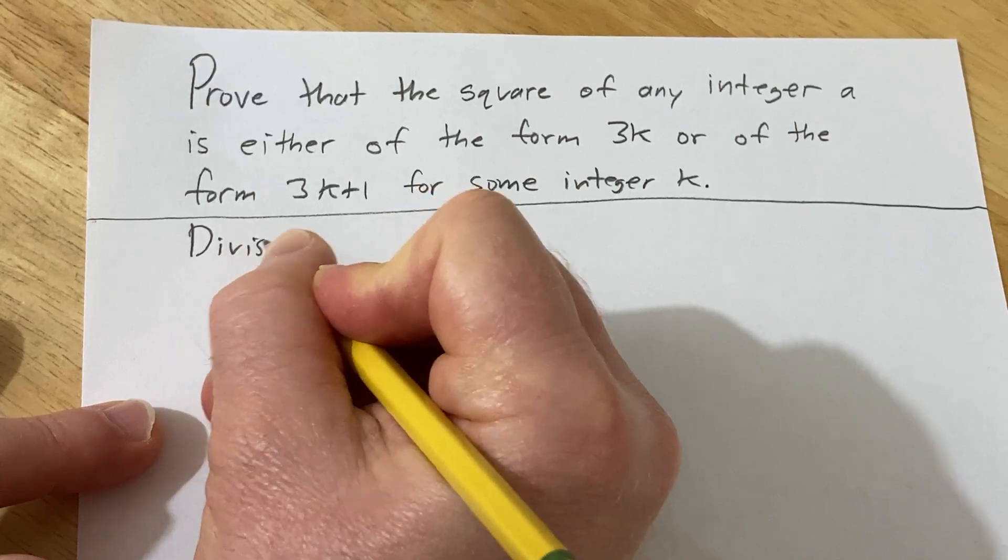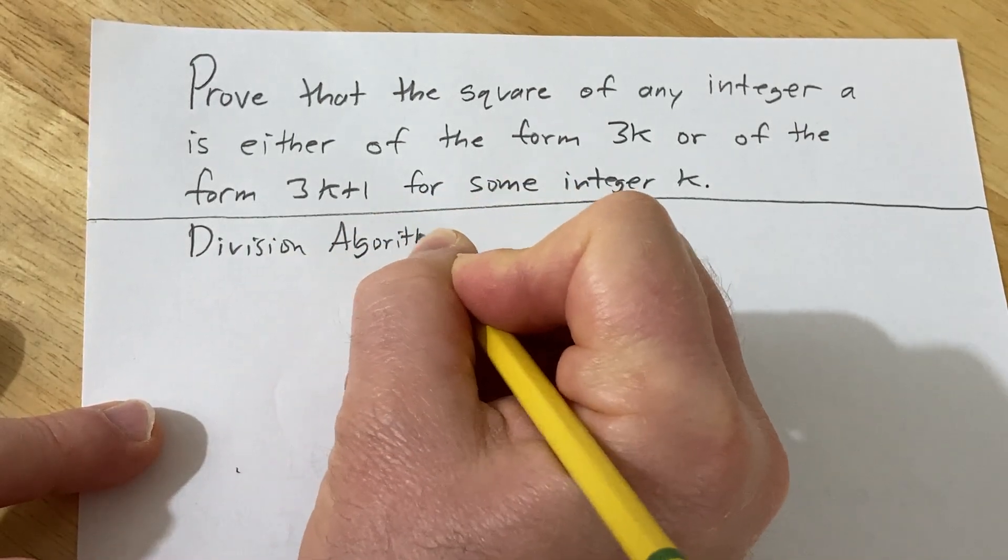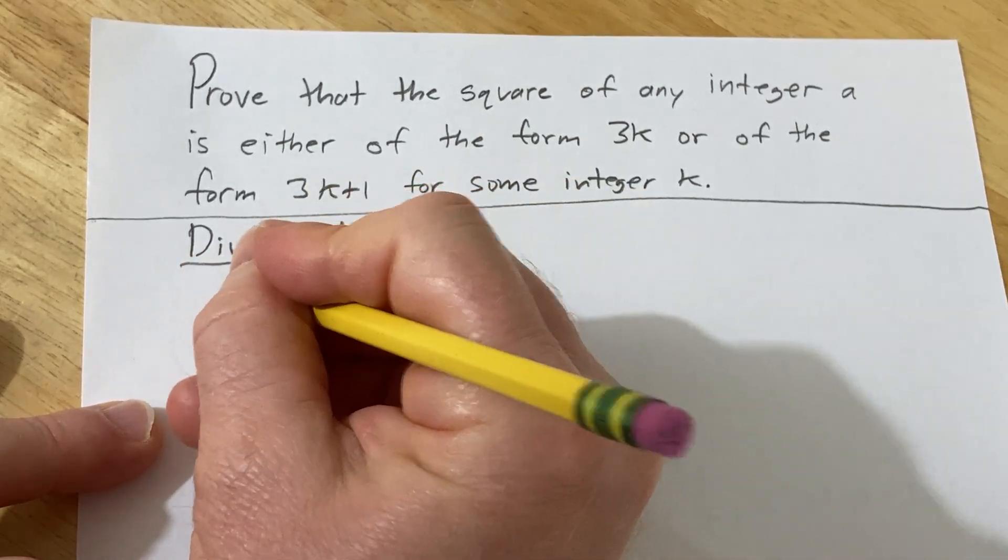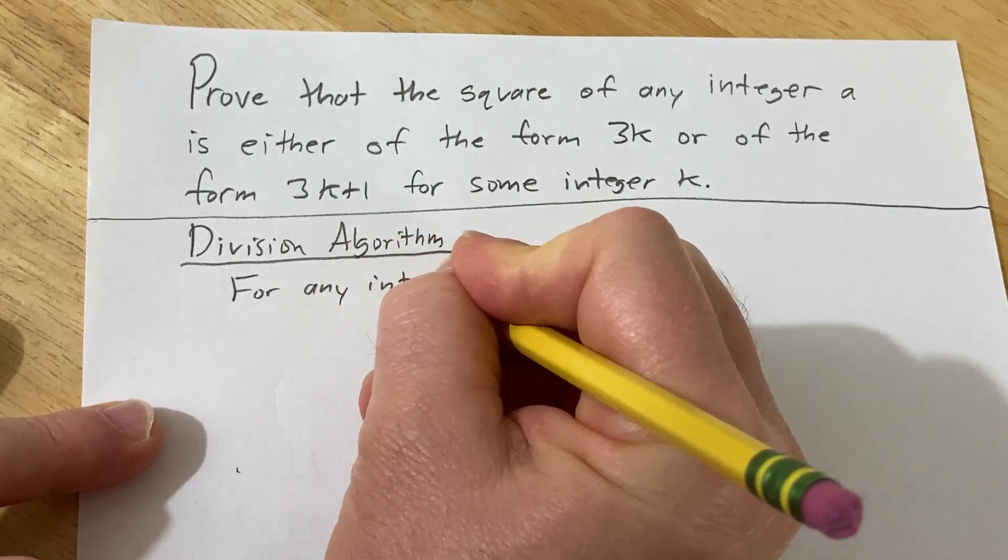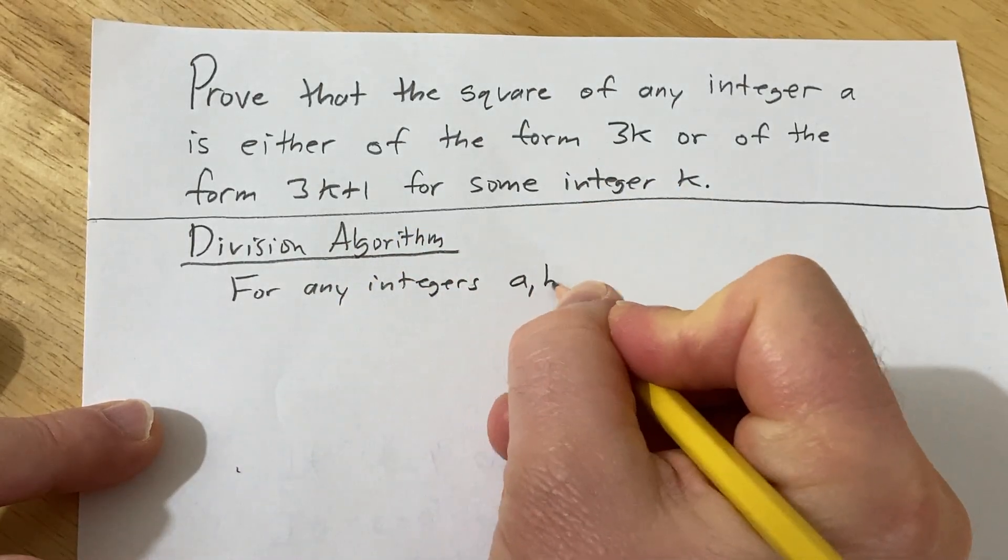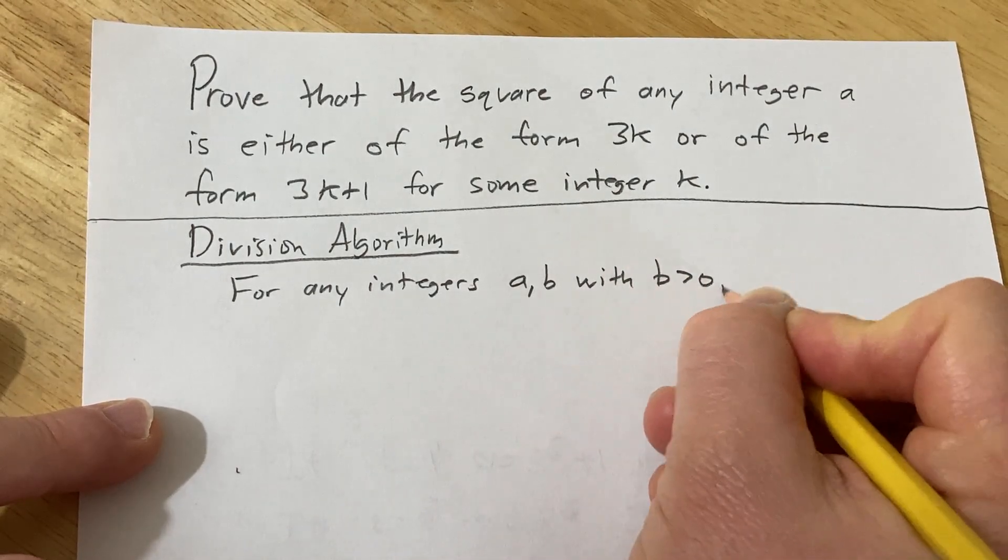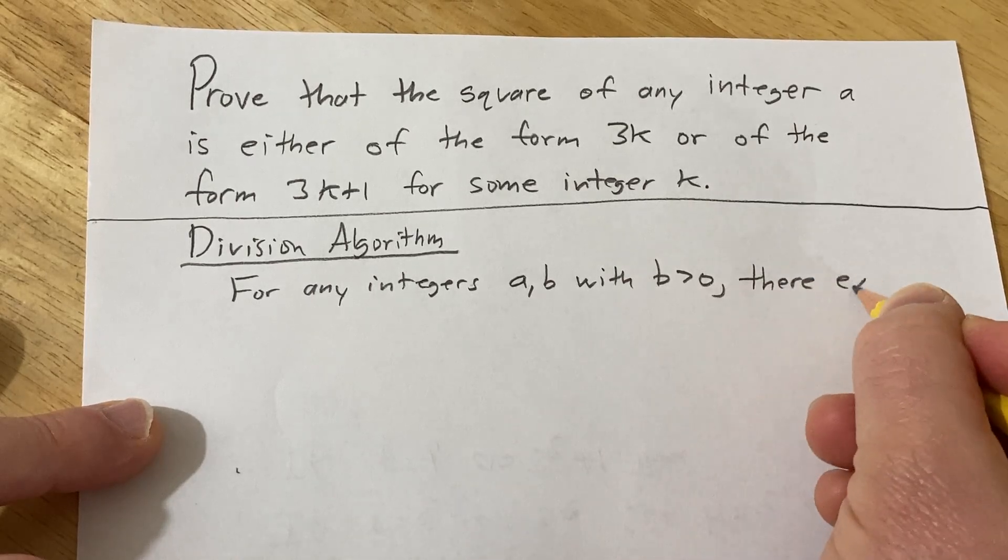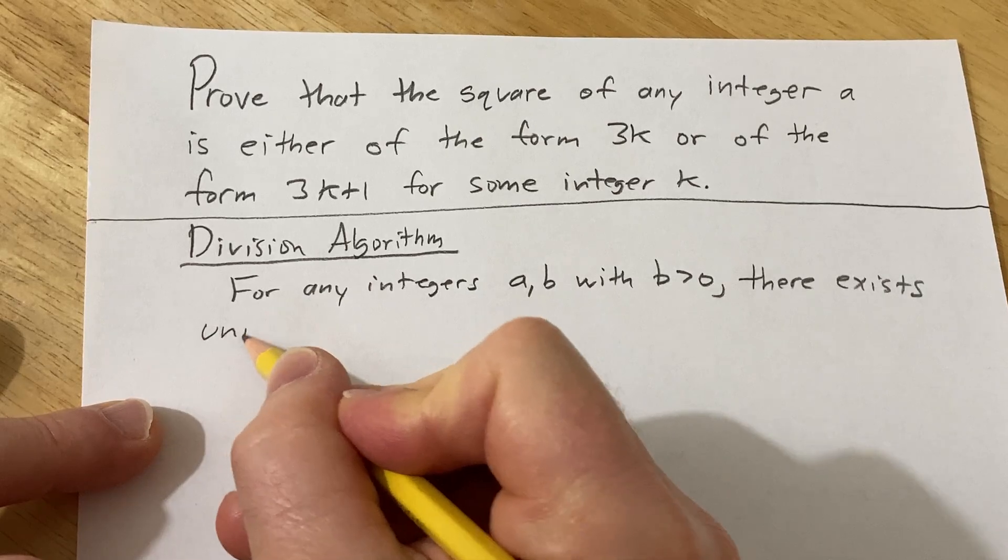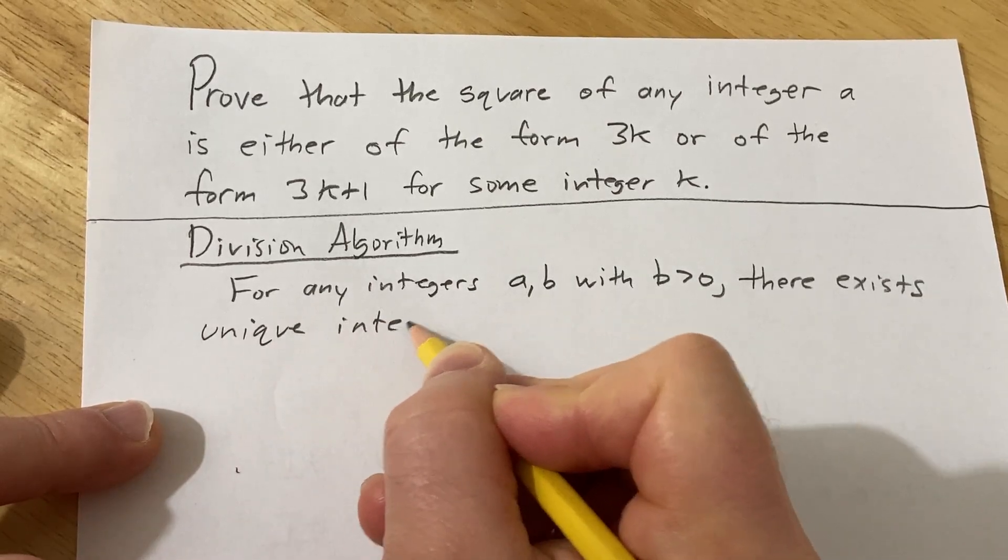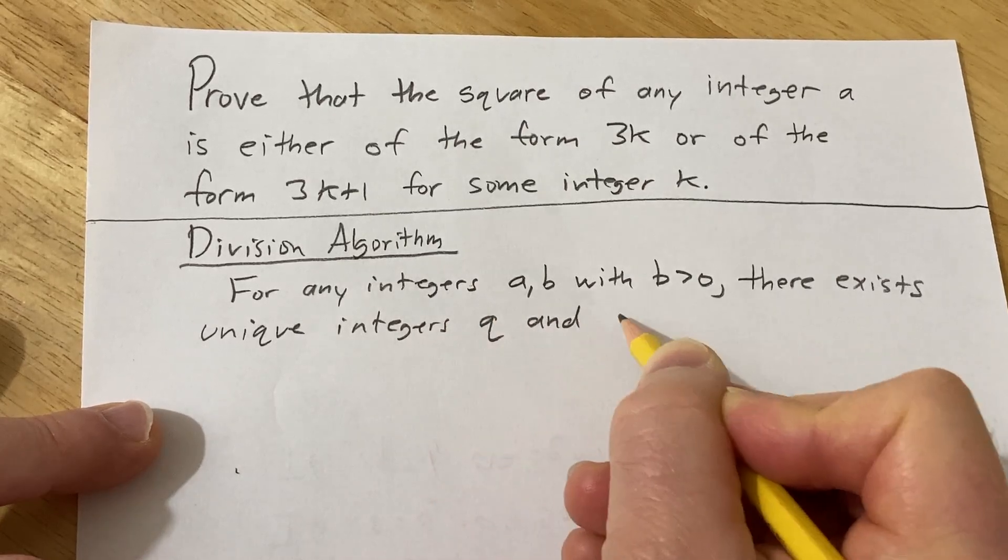The division algorithm says for any integers a, b with b greater than 0, there exists unique integers q and r